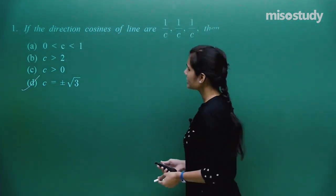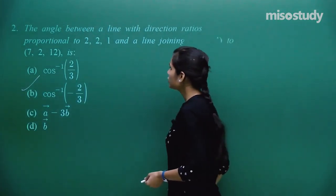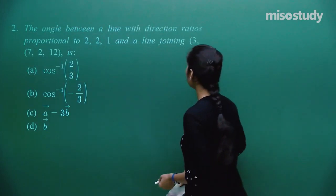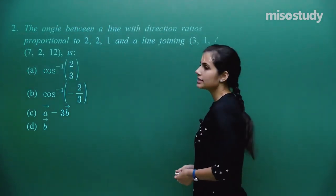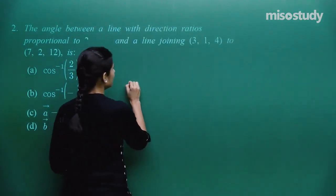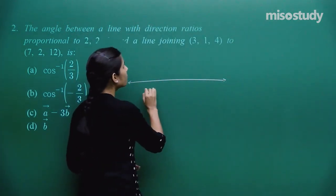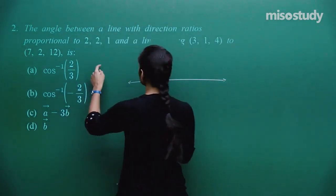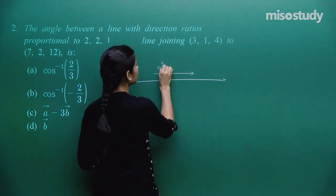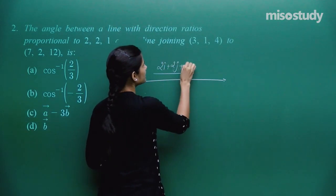The next question asks for the angle between a line with direction ratios proportional to 2, 2, and 1 and the line joining two given points. If direction ratios are proportional to 2, 2, 1, then the line is parallel to the vector 2i + 2j + k.